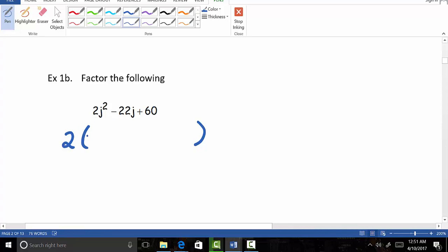Now, if we were to factor out a 2 from this 2j squared, we know that we'd have to have a j squared there. Because you could redistribute it to get the 2j squared originally.